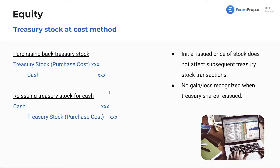Get familiar with the journal entries. When purchasing back treasury stock, think of it like buying any other stock — we debit treasury stock. I know it's not an asset; it's really a reduction to capital, a reduction from equity. We credit cash because we're actually paying cash for it.